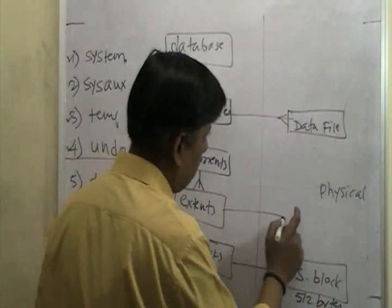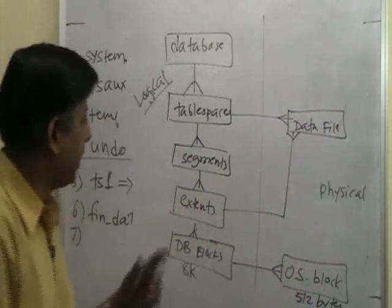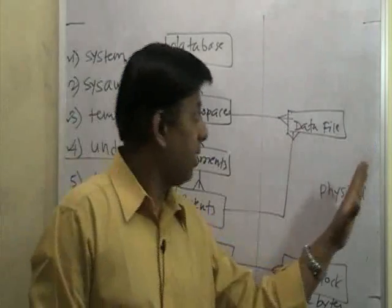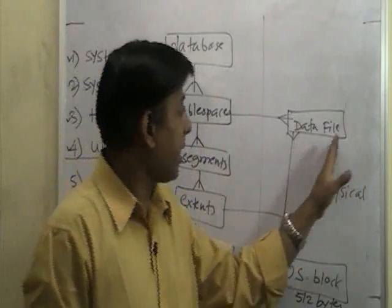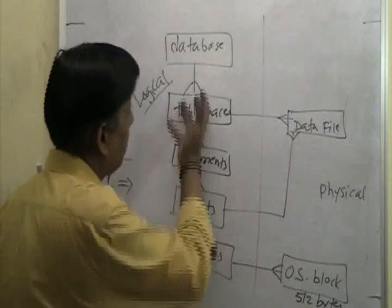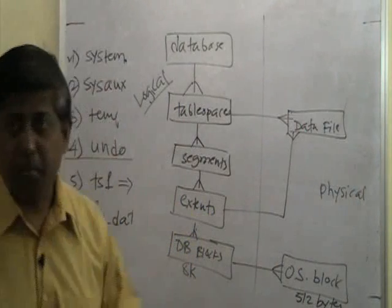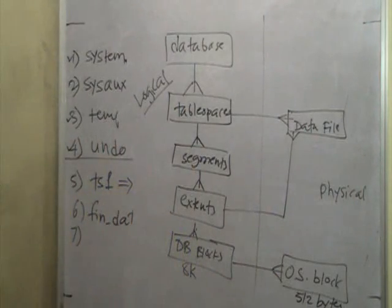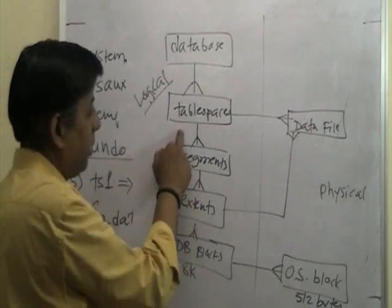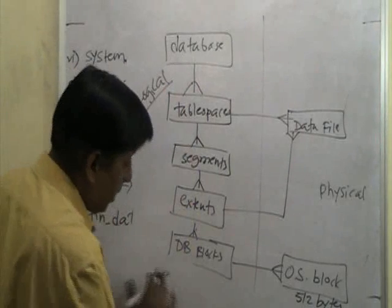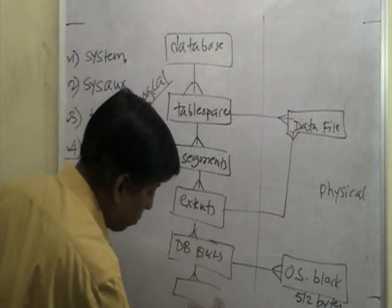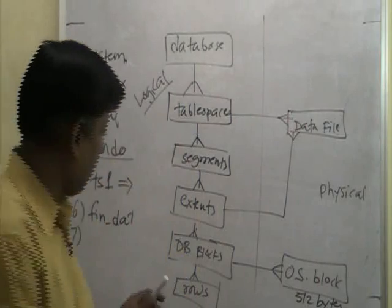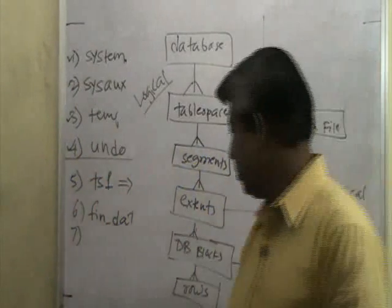One database block consists of multiple OS blocks - this is the physical view and this is the logical view. There is an arrow going from logical to physical because extents and segments are also inside the data files. So you can back up the database data files, and by backing up the data files you are backing up everything inside. This diagram appears in many Oracle documentation sources.